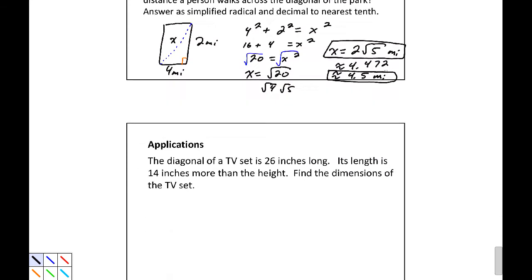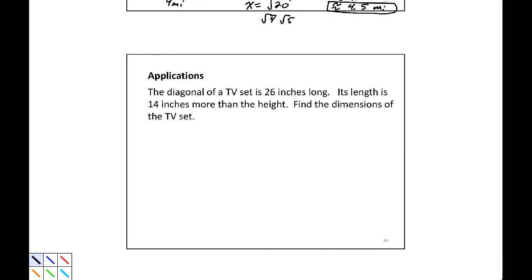Now for our next application, our last application, the diagonal of a TV set is 26 inches long. So let's draw a picture first. The diagonal itself is 26 inches long. Its length is 14 inches more than the height. Let's go ahead and say that h equals the height and l is the length. Now we know that the length is 14 more than the height, so l is h plus 14. Find the dimensions of the TV set.